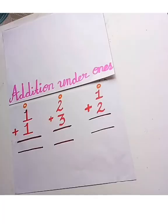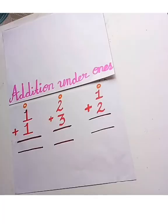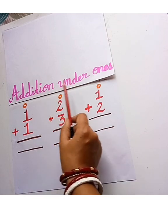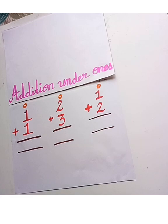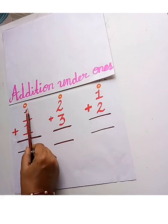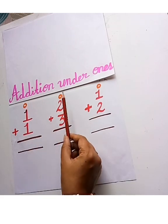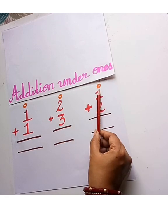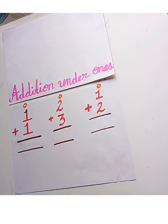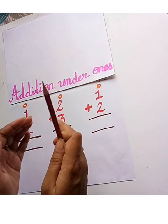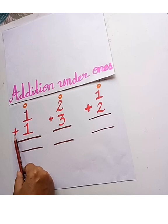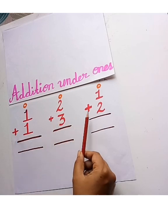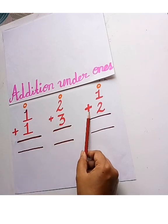Children, let's learn addition under ones. We will write O for one's place. Addition means putting numbers together. The sign used for addition is called plus.